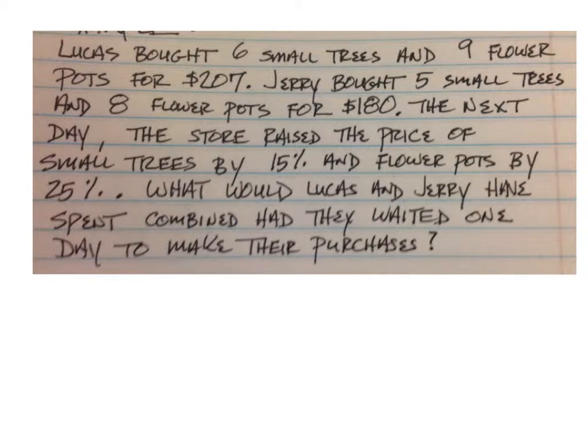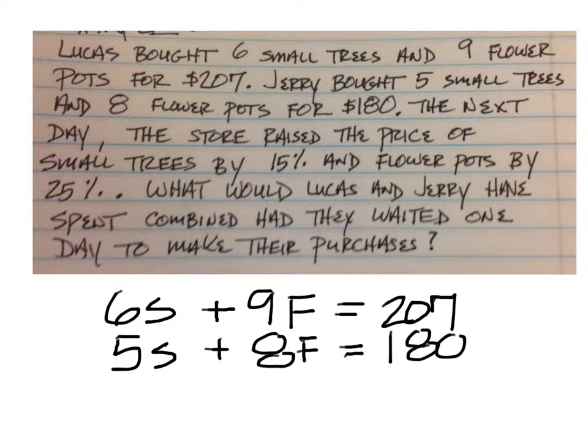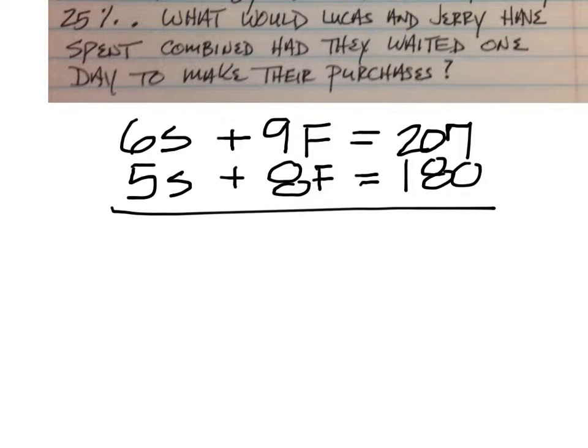If Lucas bought six small trees, we'll say 6S plus 9F for the flower pots equals $207. For Jerry, he bought five small trees and eight flower pots, and his bill was $180. From here we should be able to solve this with this two by two system and then use that information to go back and answer the problem.